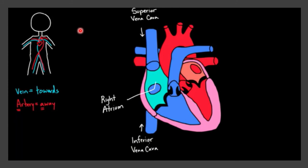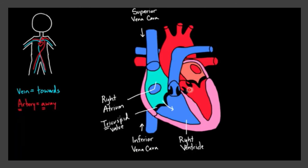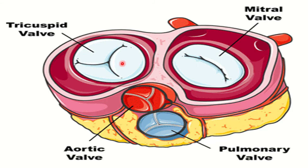First, the deoxygenated or impure blood enters into our heart through the superior vena cava and the inferior vena cava. The superior vena cava is the largest vein in the human body. These both veins pour the blood into the right atrium. Then the tricuspid valve, which is located here — this black portion — opens up and the blood pours into the right ventricle. See, this is the tricuspid valve which opens up.